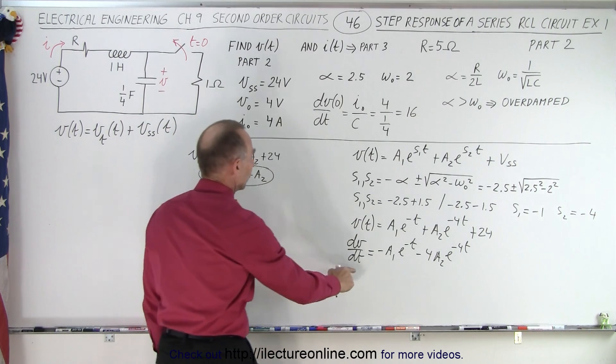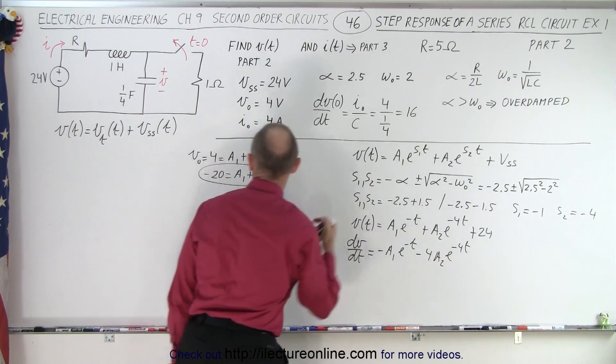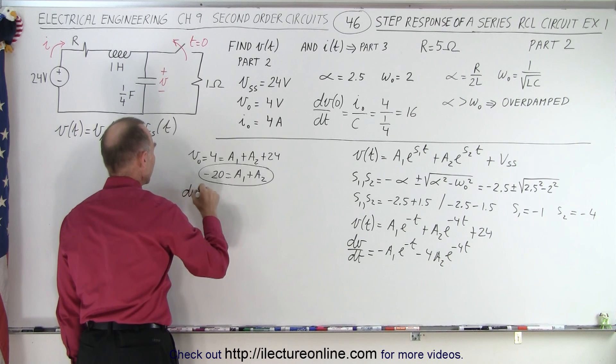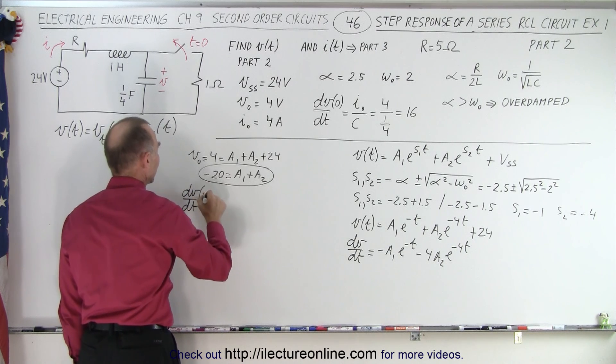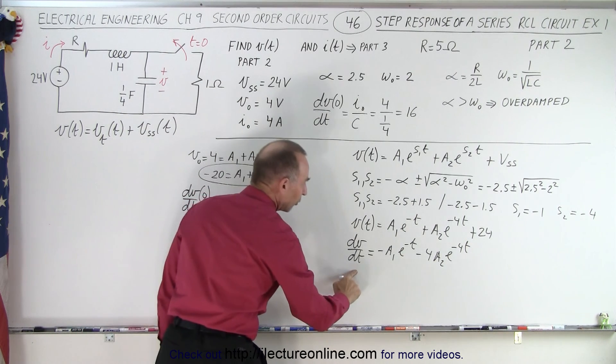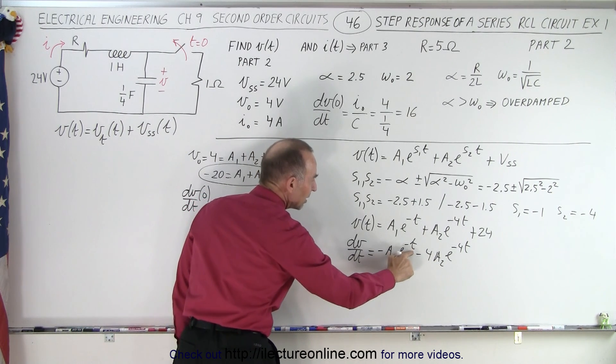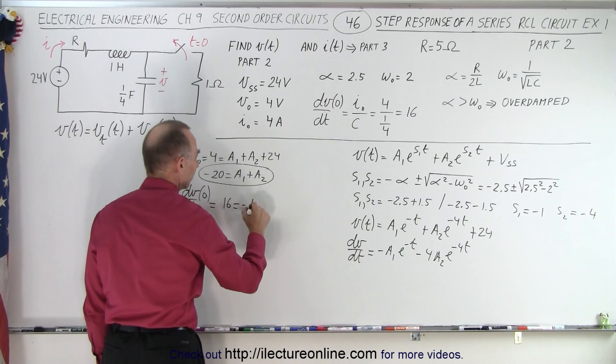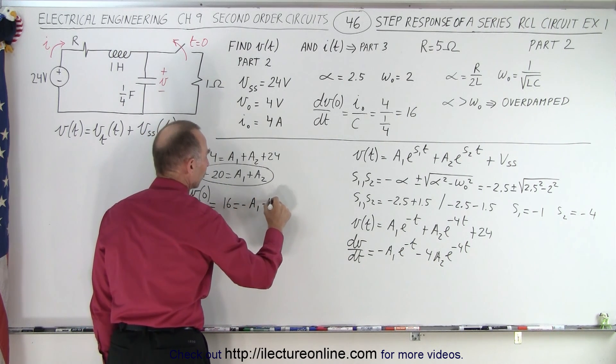All right, now when we set time equal to 0, that's equal to 16. So the dV/dt when time is equal to 0 is equal to 16, which is equal to this equation when we set T equal to 0. So in this case, that's equal to minus A1 minus 4A2.